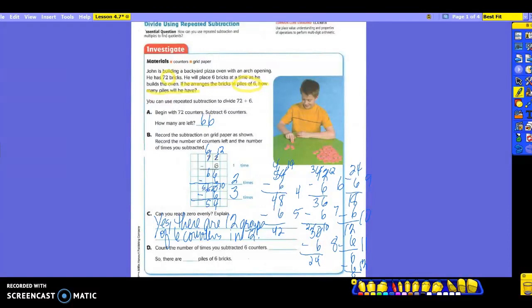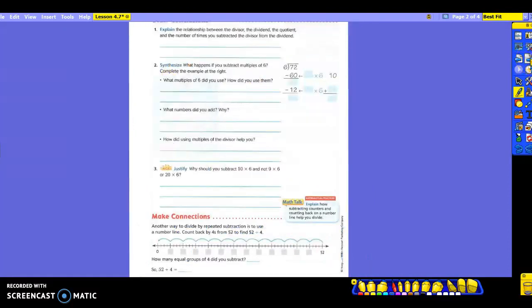It says count the number of times we subtracted the six counters. How many times was it? Twelve times. So, there are how many piles of six bricks? Twelve piles. And then, look at all the work it took. So, that sounds like we want to be able to do. Take three or four minutes to figure out one problem by using repeated subtraction this way? All right. So, hopefully, once we get going, I'll show you a different way and you'll be able to use it a little bit easier. Turn the page. We have some questions to answer about what we did.